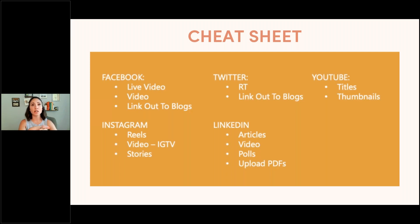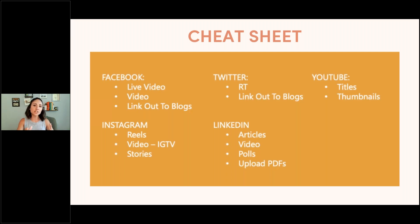Twitter is honestly one of the hardest platforms to see big engagement if you're not consistently active on it. If you're not seeing great success on Twitter, don't be there. It can be great if you attend a lot of events with hashtags, but Twitter is primarily great for retweets and driving website traffic and linking out to blogs. LinkedIn loves articles, video content, polls, and uploading PDFs to posts — great for sharing annual reports or infographics.